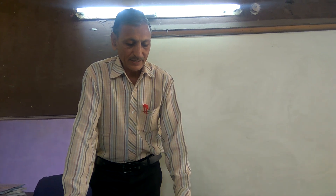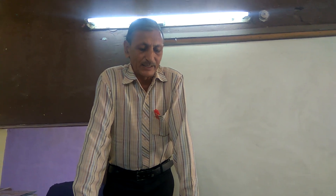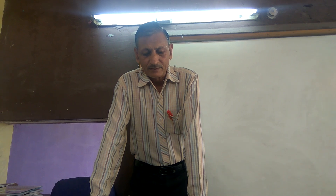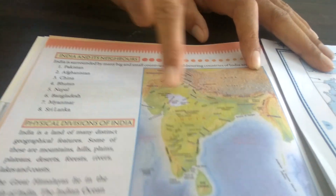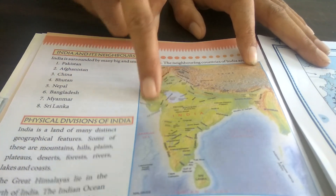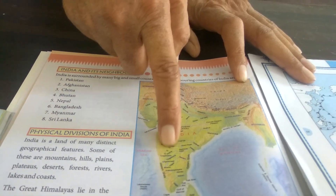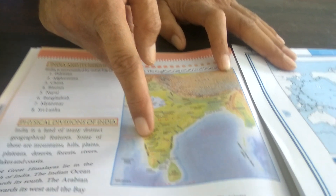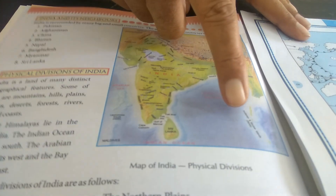So we are starting with the physical features of India. We shall be studying them one by one. We shall be studying the northern mountains, the northern plains, then of course both the deserts, the southern plateau, the coastal regions, and then of course the islands.